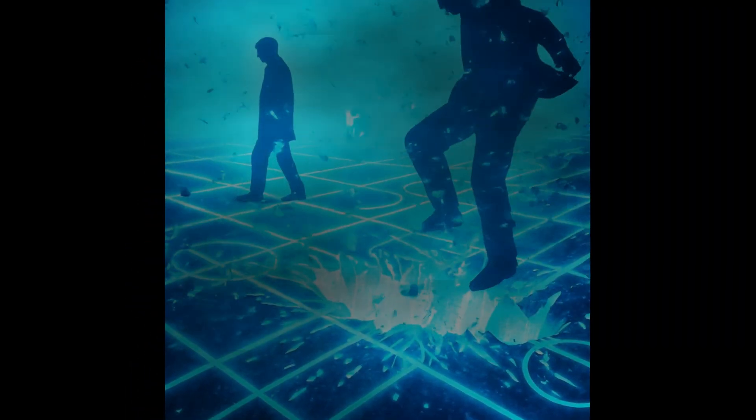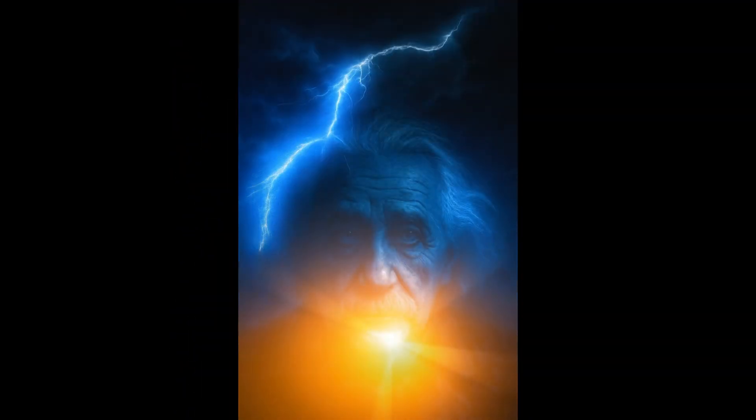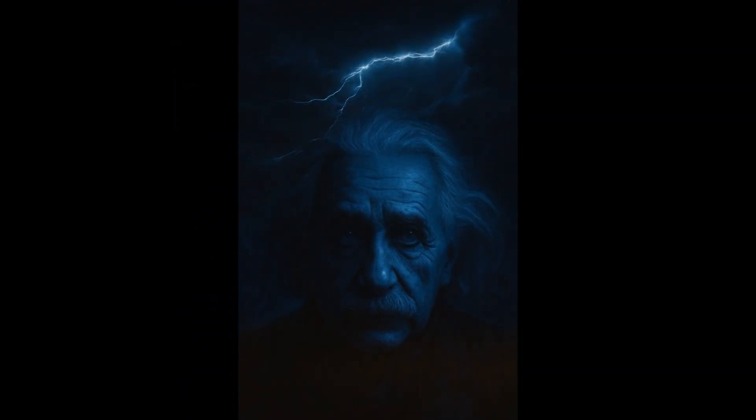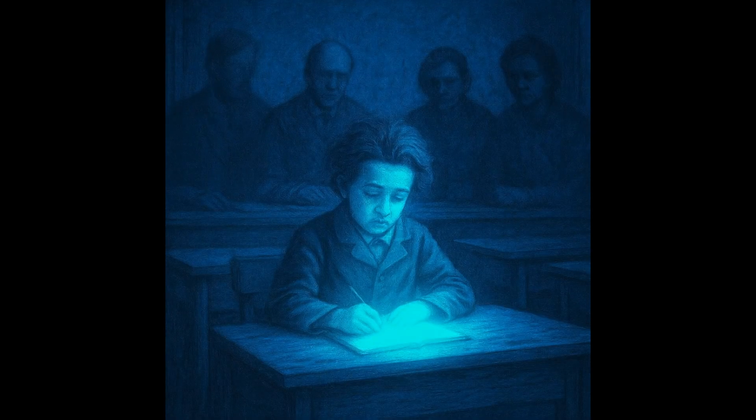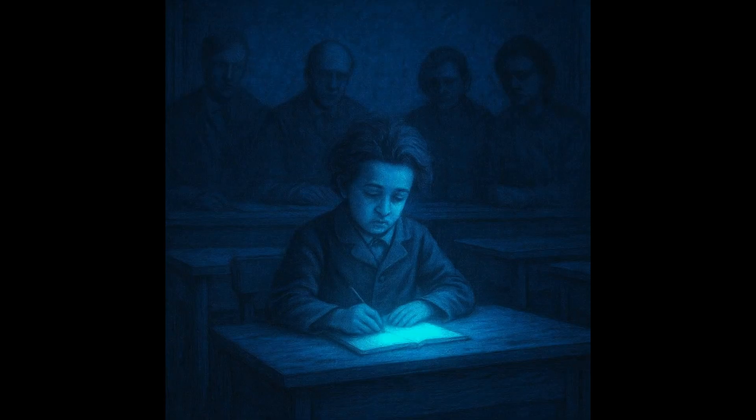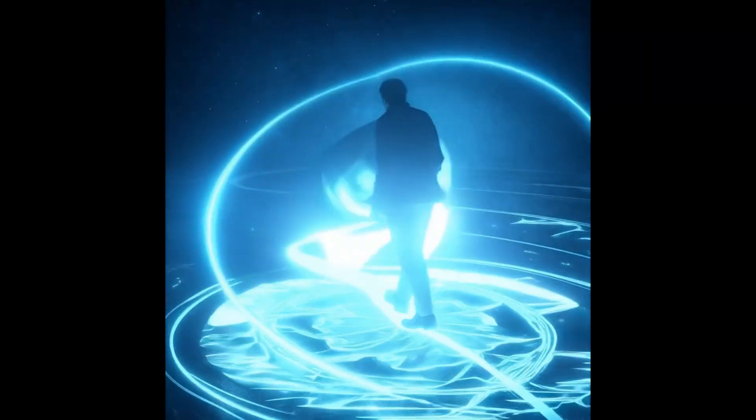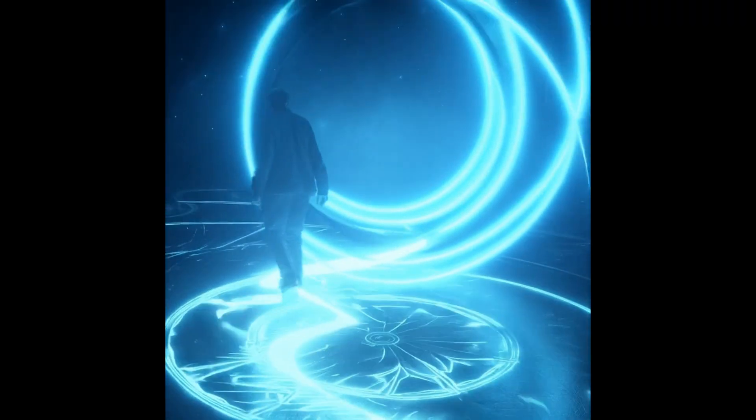Some men follow the rules of nature, others break them. Albert Einstein did not simply study the universe, he defied it. And in the defiance, he became eternal. No prodigy to his teachers, he was dismissed as lazy, unfocused, a failure. His mind wandered where theirs could not follow, but the shadows of rejection only sharpened his brilliance.